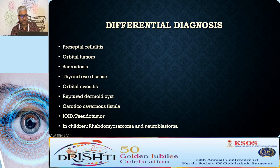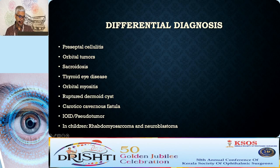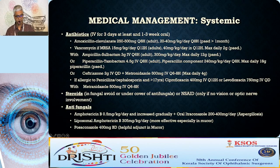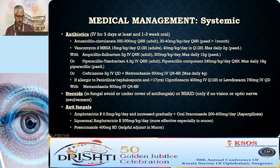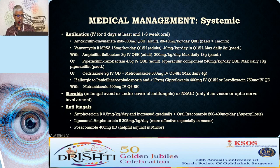Differential diagnoses include preseptal cellulitis, orbital tumors, sarcoidosis, thyroid eye disease, orbital myositis, ruptured dermoid, CCF, pseudotumors, and in children rhabdomyosarcoma or neuroblastoma. Management: systemic antibiotics are the mainstay. Give IV antibiotics for at least three days then continue for one to three weeks. Start with amoxicillin-clavulanic acid, 500 mg three times per day in adults; in pediatrics, titrate to 20-30 mg/kg/day.